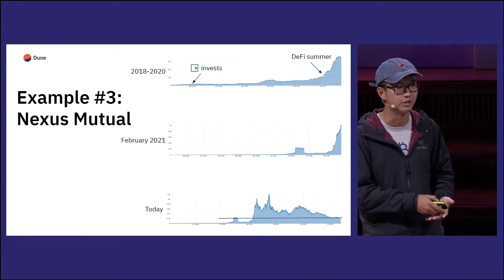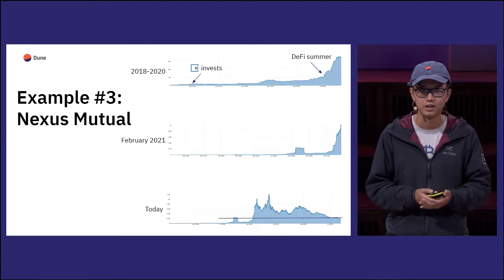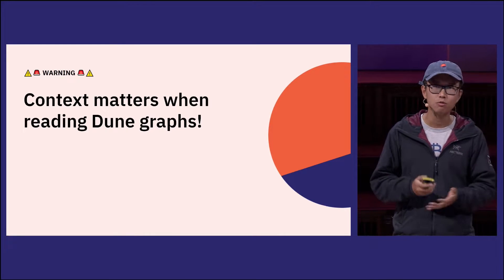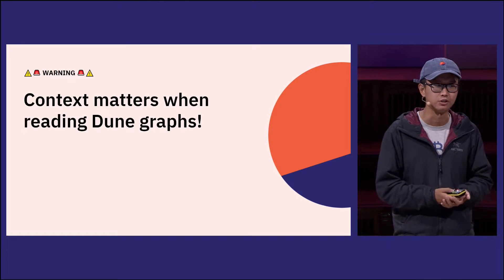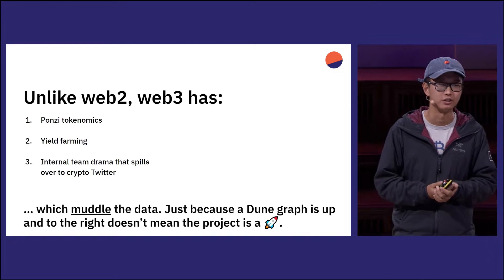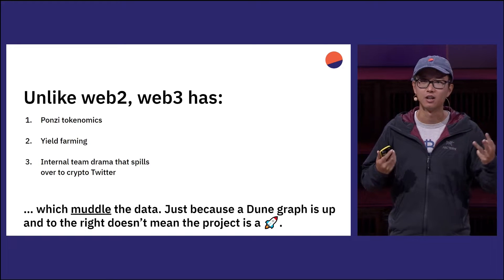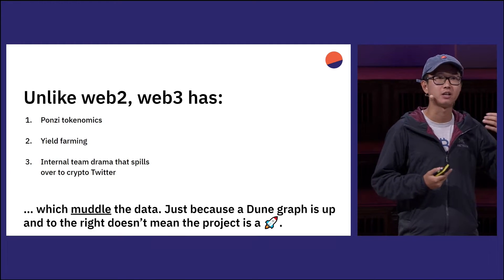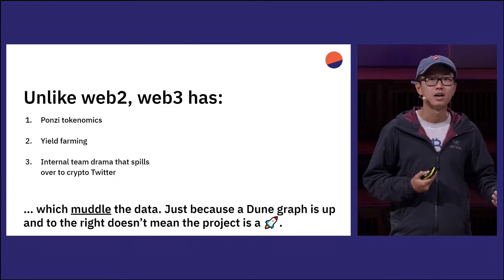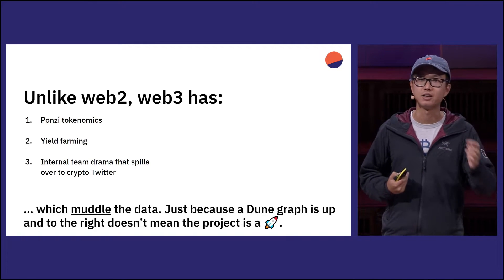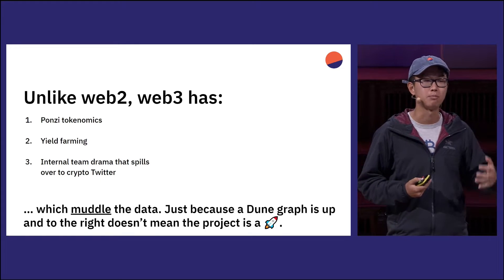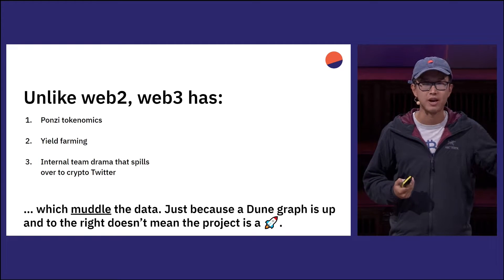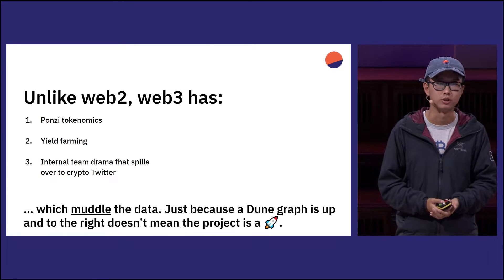These three examples show the trends of successful projects looking at their Dune data. Now I want to talk about common pitfalls and warnings when looking at Dune charts — misconceptions when people share them on Twitter. Unlike Web 2, Web 3 has three features: Ponzi tokenomics, yield farming, and a lot of drama on crypto Twitter. With tokens and money involved, it's very easy to pay people to use your product. People conflate that as having product-market fit, but just because you're paying people to use your product doesn't mean you actually have PMF. That really muddles the data when you look at Dune stuff.